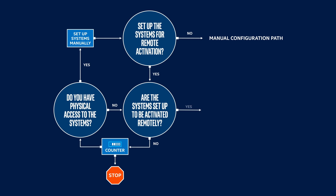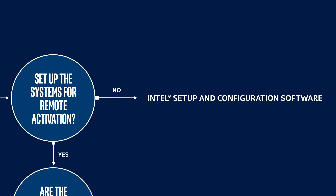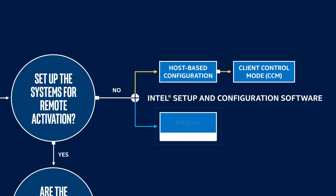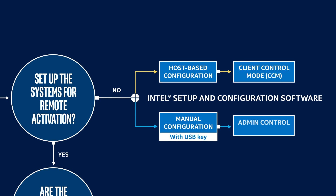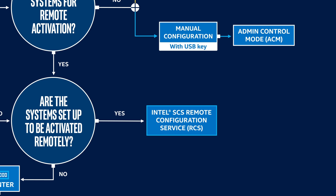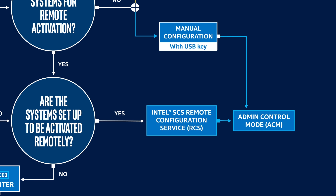Remote configuration is highly recommended for environments with a large endpoint count. Intel setup and configuration software offers two manual configuration options, each resulting in a different operating mode for AMT. Host-based configuration results in client control mode, while manual configuration using a USB key results in admin control mode. The difference is that admin control mode does not require user consent before a technician can remotely take over a machine. Utilizing Intel Remote Configuration Service always results in an admin control mode setup.